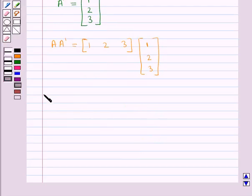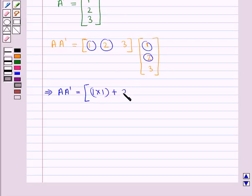Thus we have AA dash is equal to the matrix with element 1 multiplied by 1 plus 2 multiplied by 2 plus 3 multiplied by 3.